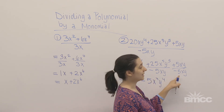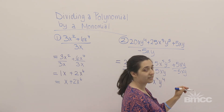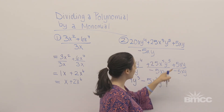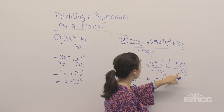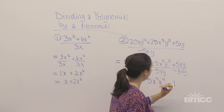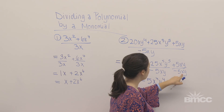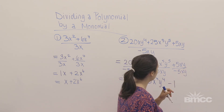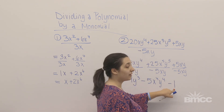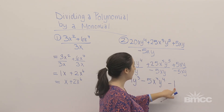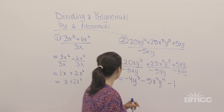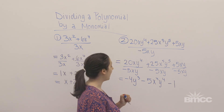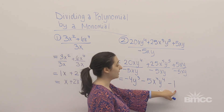Now let's look at this last term. You may also just want to cancel out these two terms, but that is not entirely correct. Let's look at the whole numbers first. We have positive 5 divided by negative 5, which is negative 1. x divided by x is x to the 0 power, which is 1, and y divided by y is y to the 0 power, which is 1. But remember I still have a negative 1 here, so I have to write the negative 1. So my final solution will be negative 4y to the 3rd minus 5x to the 4th y to the 4th minus 1.